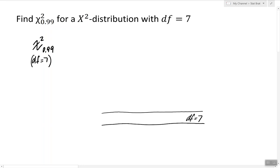In that row, we look for the column that corresponds to alpha equal to 0.99. We will find the value 1.239 in there. Therefore, the answer to our question is 1.239.